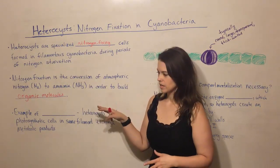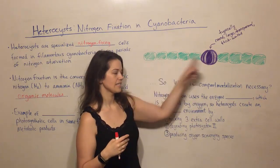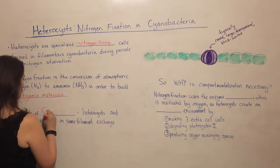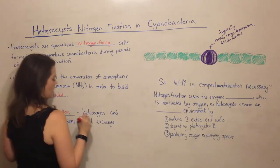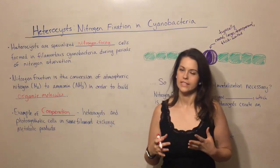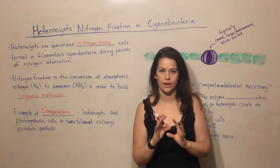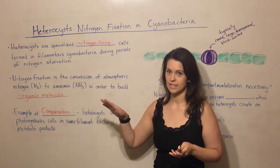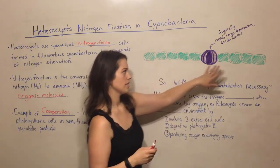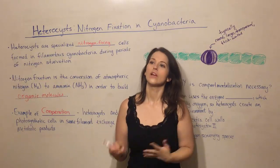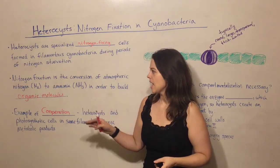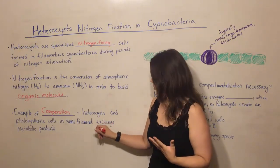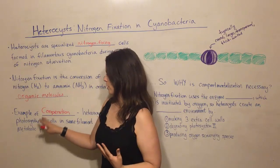This formation of heterocysts inside filamentous cyanobacteria is a great example of what is known as cooperation. When we refer to cooperation between cells, we mean that they both do something and share with the other to their mutual benefit. The heterocysts make ammonia, critical for making amino acids and nucleotides, while the other cells in the chain — the green ones — are photosynthetic, taking energy from the sun and storing it in glucose. So the heterocysts and photosynthetic cells in the same filament benefit from each other, exchanging metabolic products. That's cooperation.